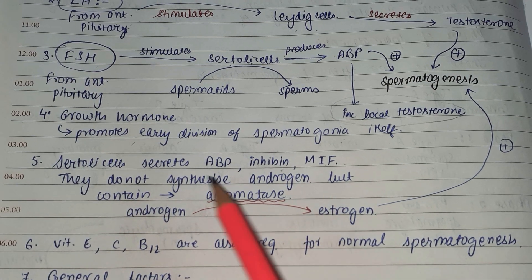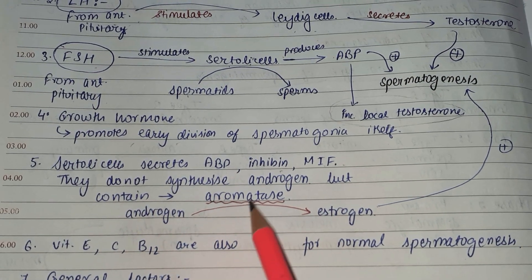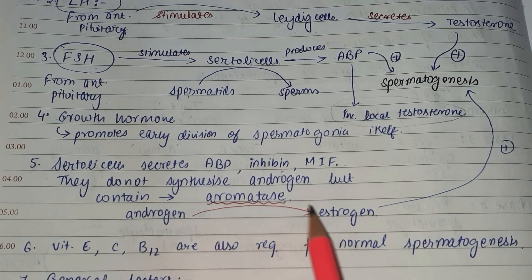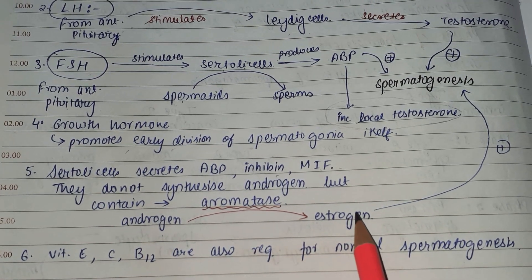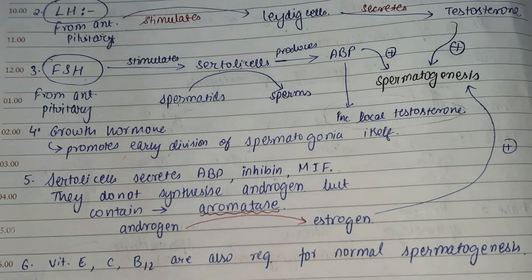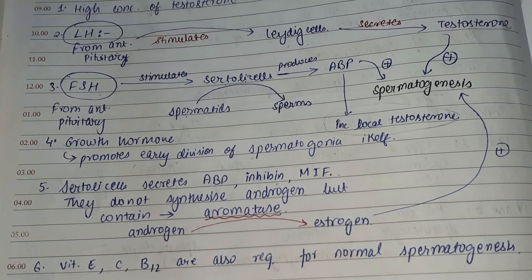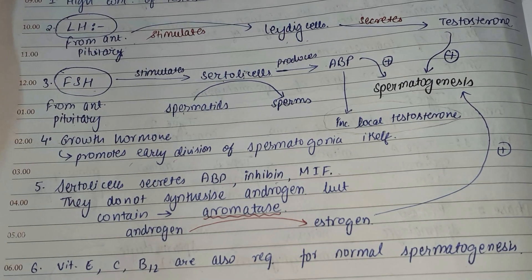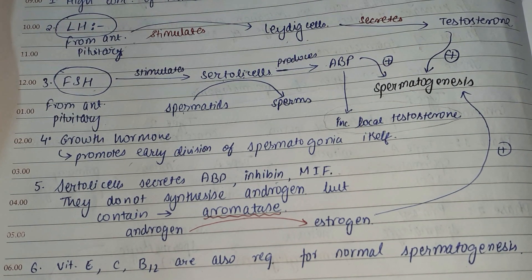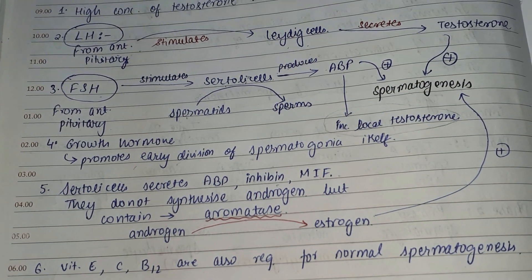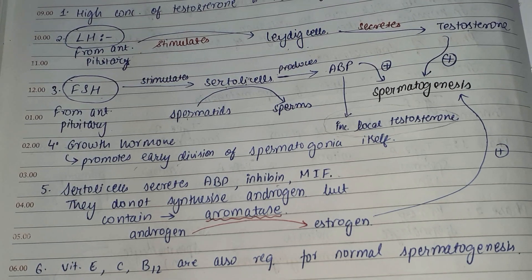Sertoli cells secrete androgen binding protein and MIF (Mullerian inhibitory factor). They do not synthesize androgens, but they contain aromatase — an enzyme necessary for the conversion of androgens to estrogen. Estrogen also helps in spermatogenesis. Estrogen is secreted by Sertoli cells, specifically in the rete testis region.